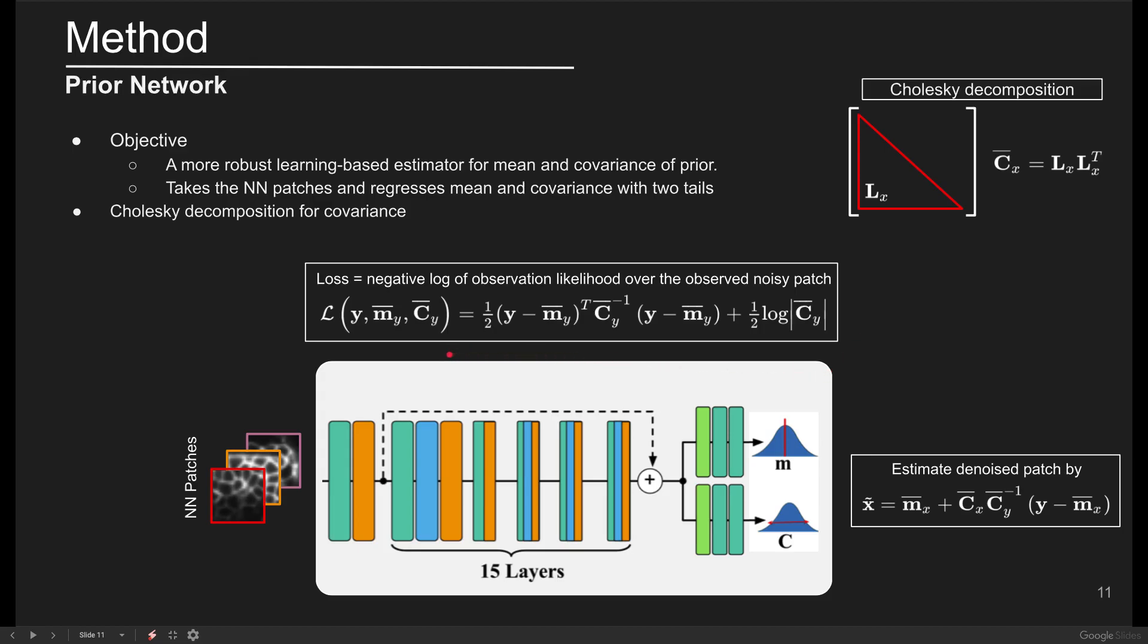For the loss function, we validate the observation likelihood that is the Gaussian with MY and CY over the observed patches. Specifically, we calculate MY and CY from the predicted MX and CX and minimize the negative log of observation likelihood over the observed noisy patches to guide the learning in favor of giving accurate estimates of MX and CX.